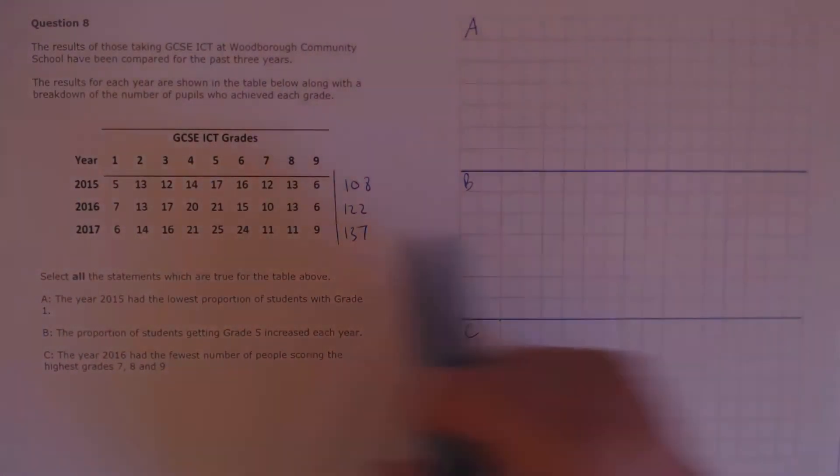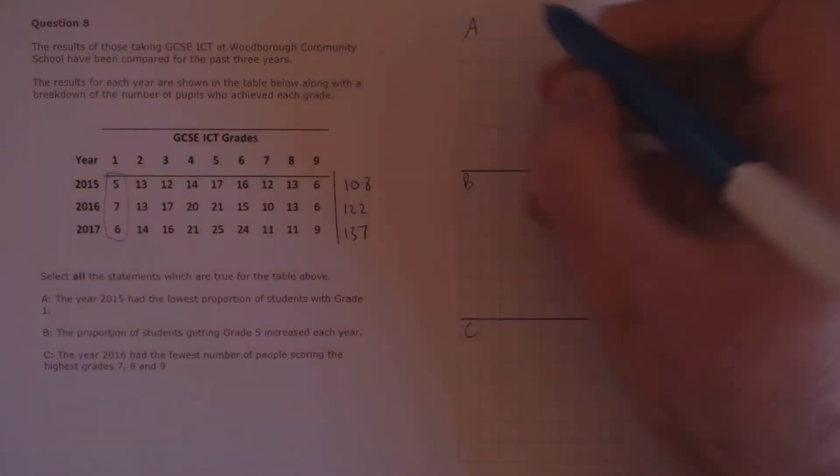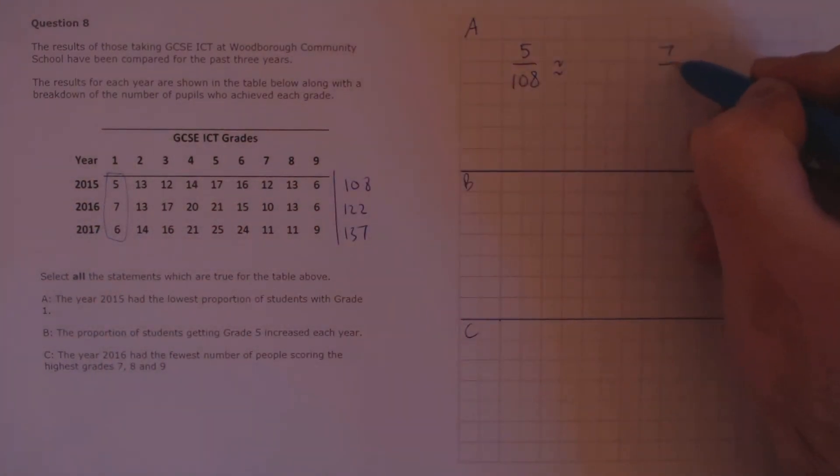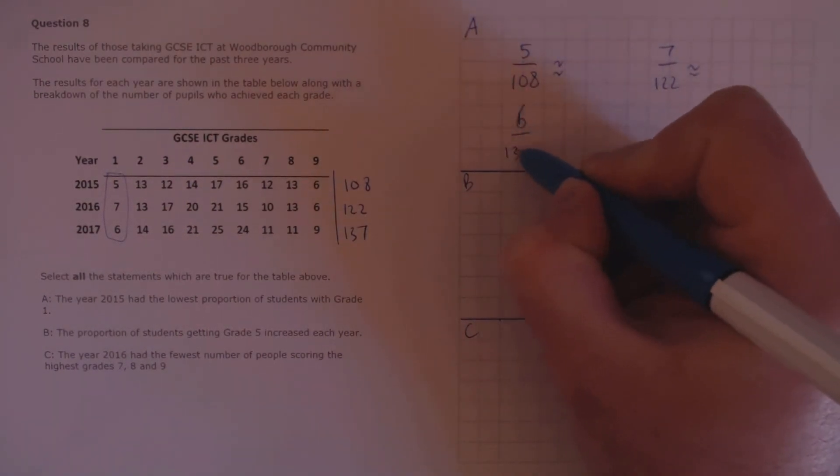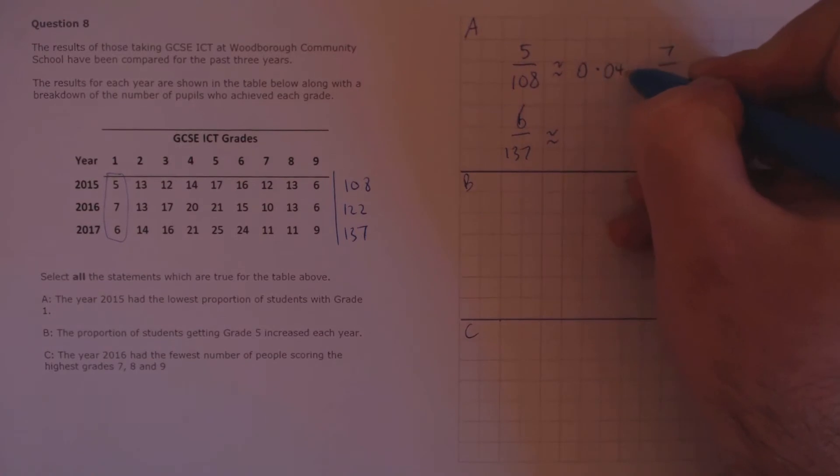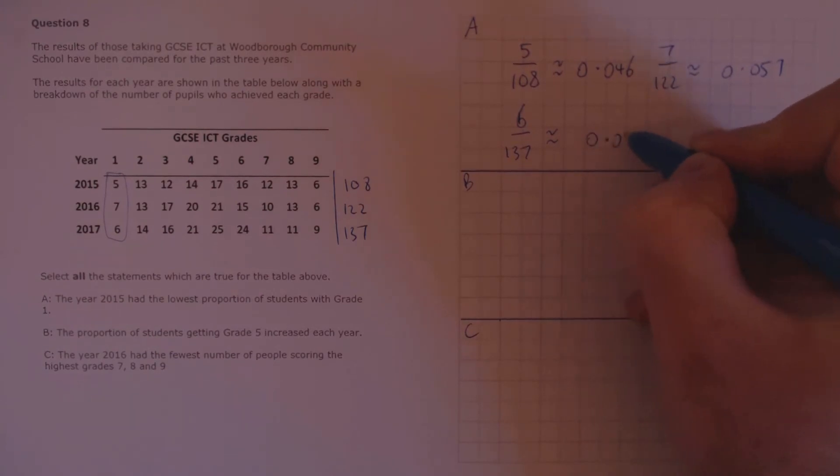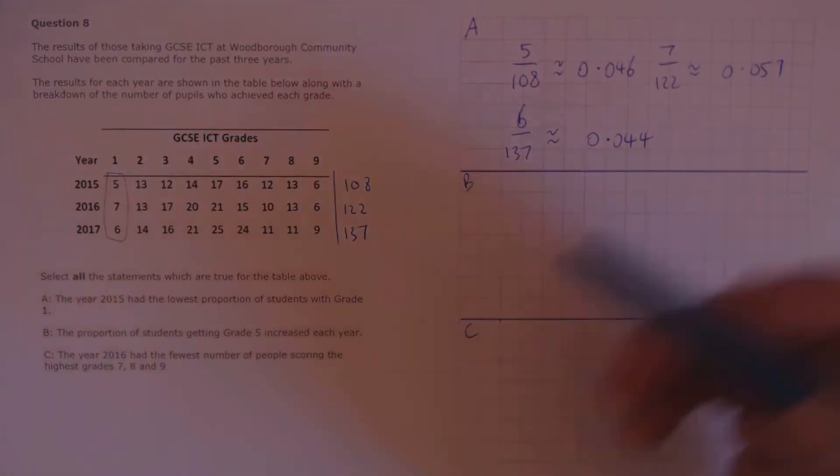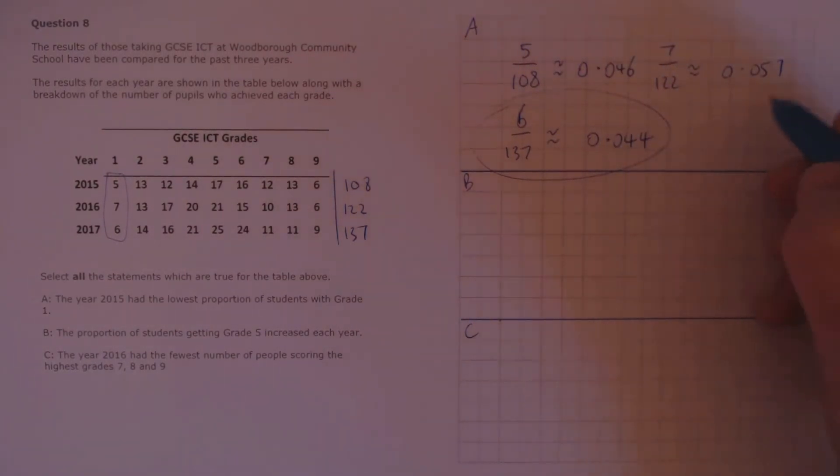In year 1, 2015, the proportion of students who achieved a grade 1 is found in this column here, so that's 5. So, 5 over 108. In 2016, it's 7 over 122, and in 2017, it's 6 over 137. If we calculate those, we'll find that we get approximately 0.046, 0.057, and 0.044. The question said the year 2015 had the lowest proportion of students with grade 1. Well, actually, that's false because 2017 has a lower proportion, around 4.4%. So, that's false.